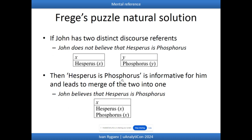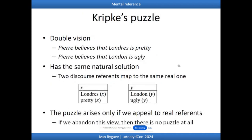John doesn't believe that Hesperus is Phosphorus when he has two different discourse referents; John believes that Hesperus is Phosphorus when those two predicates apply to the same discourse referent in his mind. Kripke's puzzle about Pierre — who believes that Londres is pretty but that London is ugly, not recognizing that Londres and London are the same city — has the same solution: there are two discourse referents in Pierre's mind which map to the same real one.